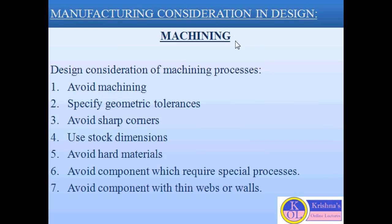The third type of manufacturing processes are machining processes or material removal processes. When material is removed by some sharp cutting tool, those processes are called machining processes or material removal processes — like drilling, turning, milling, grinding, shaping, planing, lapping, etc. Products obtained from machining processes include shafts, keys, bolts, nuts, etc.